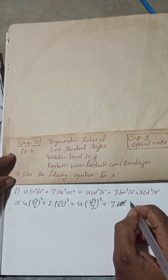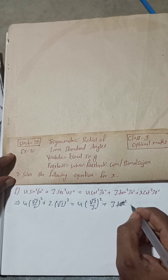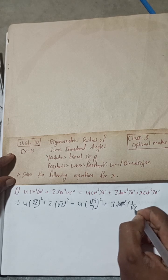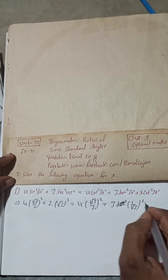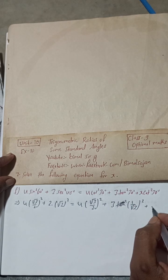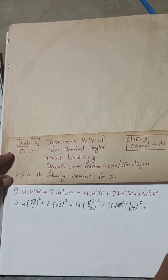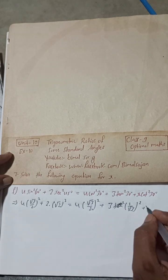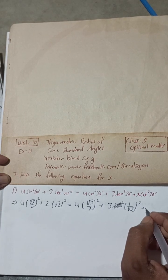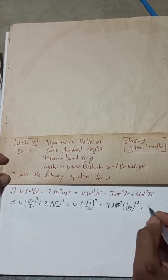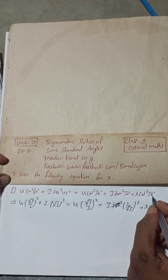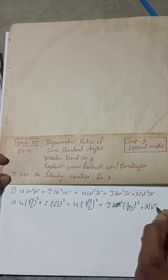tan 30 value is 1/√3, and then square, plus x cot²30°. Let me adjust here. This is x and cot²30°, so cot 30 value will be √3, and then whole square.